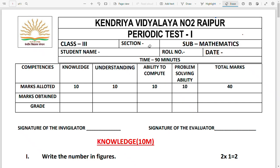Namaskar, today we are going to discuss the mathematics paper of periodic test first of class third. In this paper, we will discuss the format of the question paper and how to solve it. As you can see, the front page of the paper is here. Class is already mentioned. You have to mention your section name (A, B, C, D) accordingly. Always try to write your name in capital letters and write your full name. After that, write the roll number assigned by your class teacher. Next, write the exam date — suppose the exam is on 20 July, you will write 20/7/22.